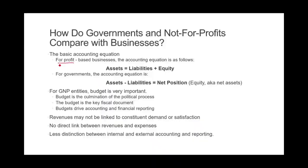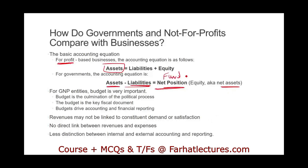The basic accounting equation for a business is: assets equal liabilities plus equity or stockholders' equity. For government, we look at it differently: assets minus liabilities equals net position, or net assets — also called fund balance. So the fund balance equals assets minus liabilities. It's the same accounting equation, just rearranged. For a business, we care about what assets equal; for government, we care about the difference between assets and liabilities.